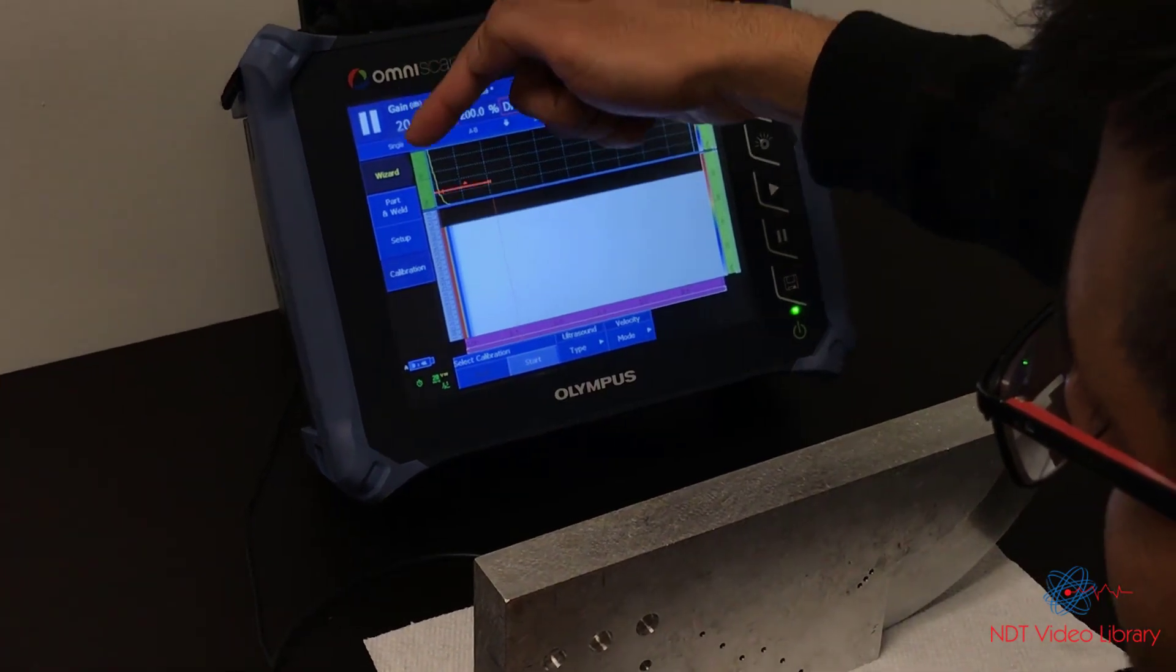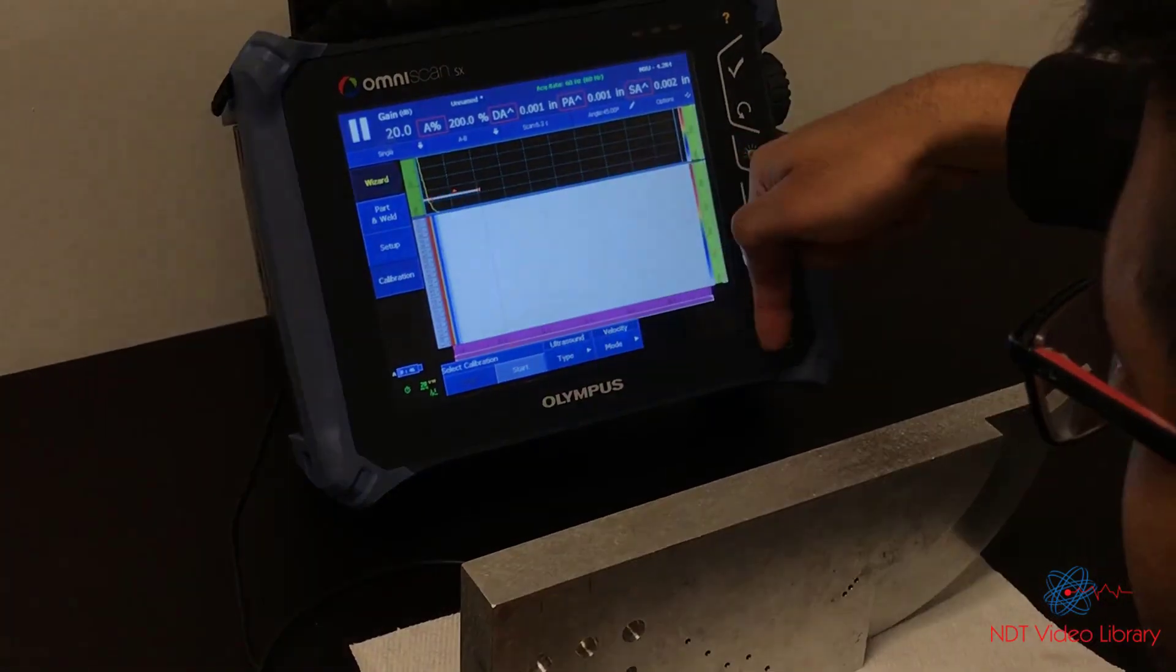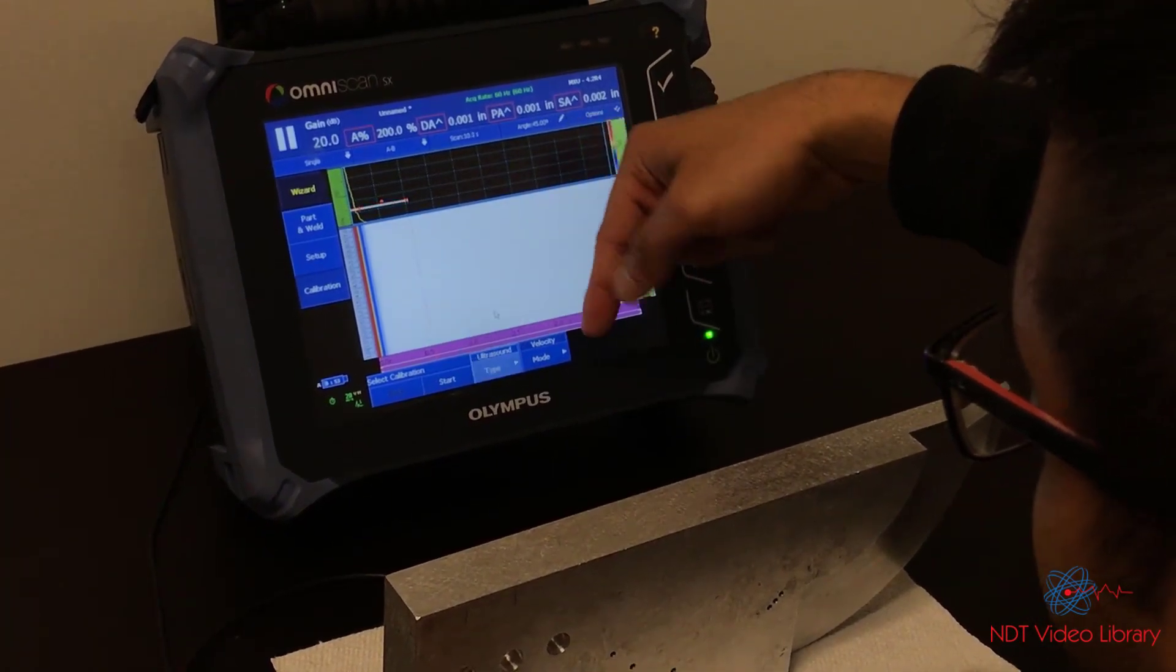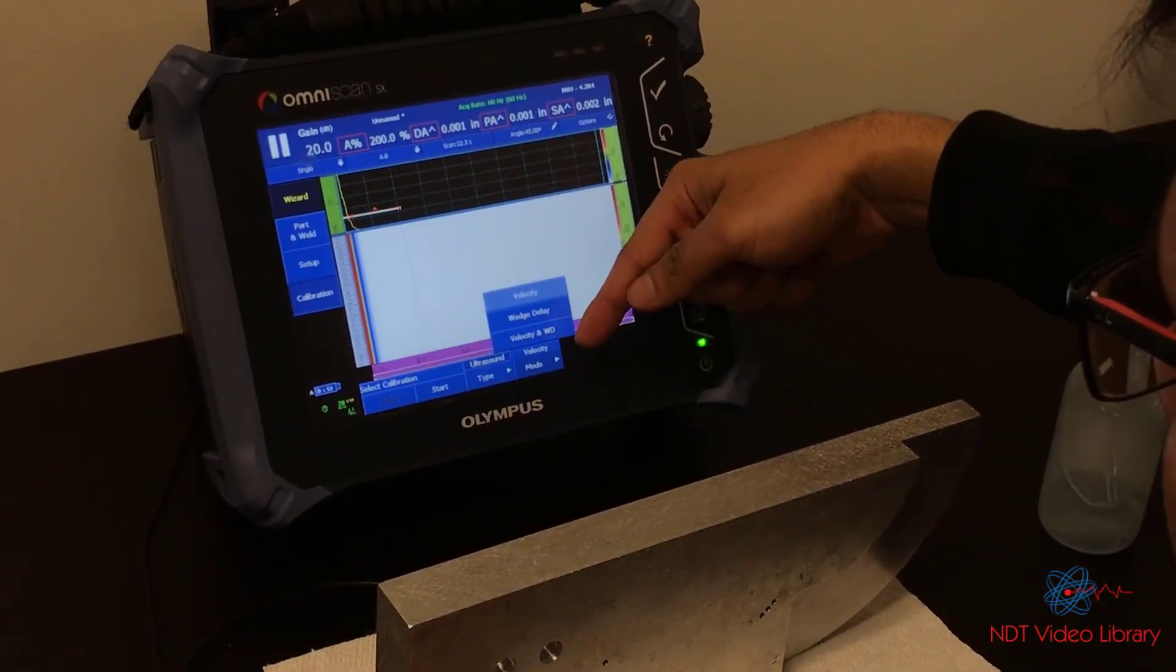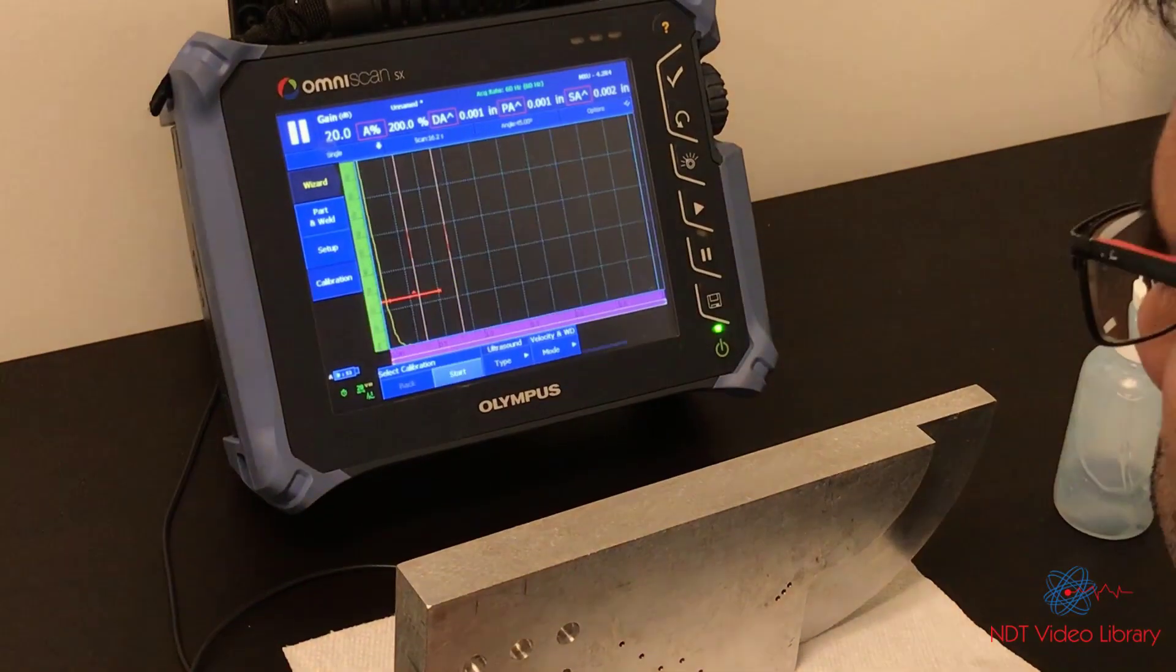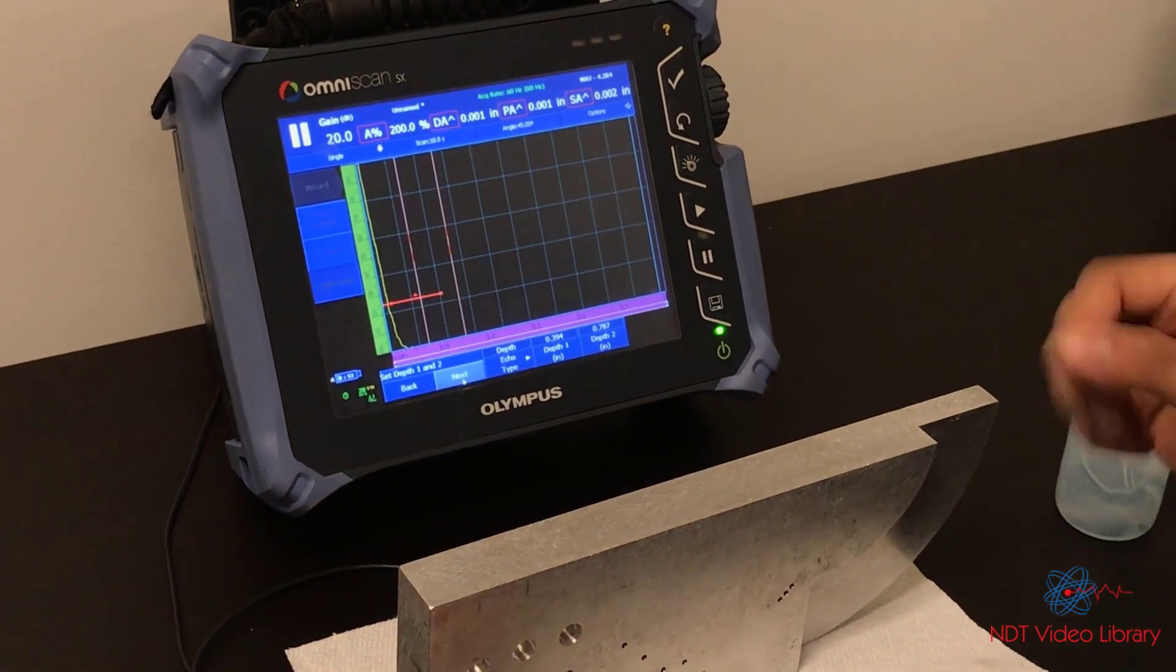Remember, we always go from top to down, left to right. So we move to calibration. Type ultrasound. Mode, we can calibrate both together, velocity and wedge layer together. Start.